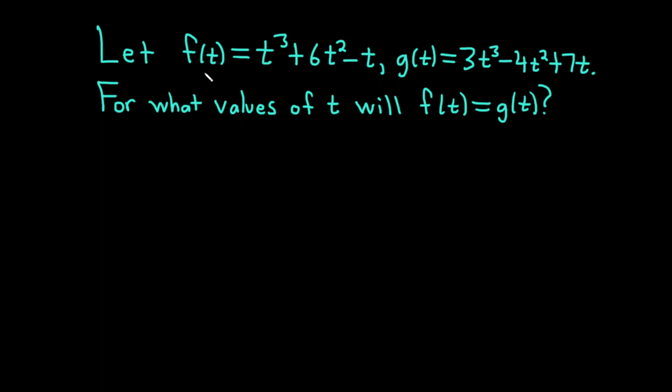The question says let f of t equal t cubed plus 6t squared minus t and g of t equal 3t cubed minus 4t squared plus 7t. For what values of t will f of t be equal to g of t?